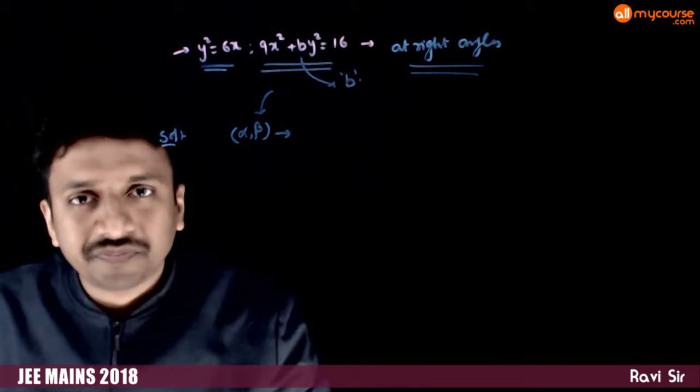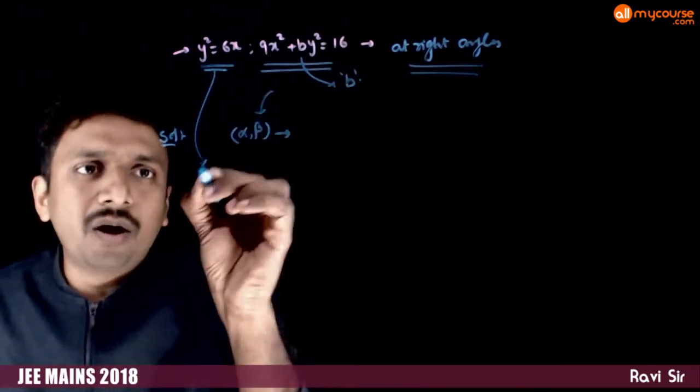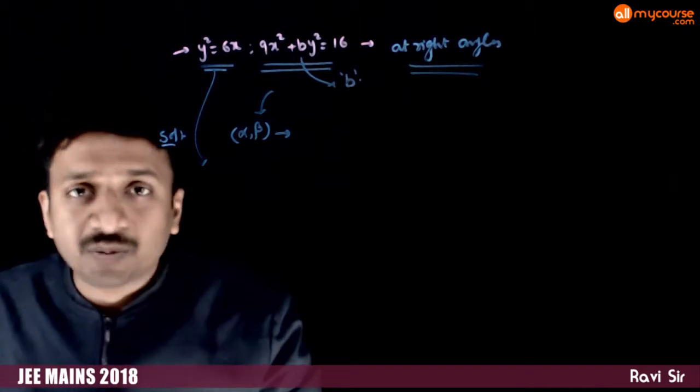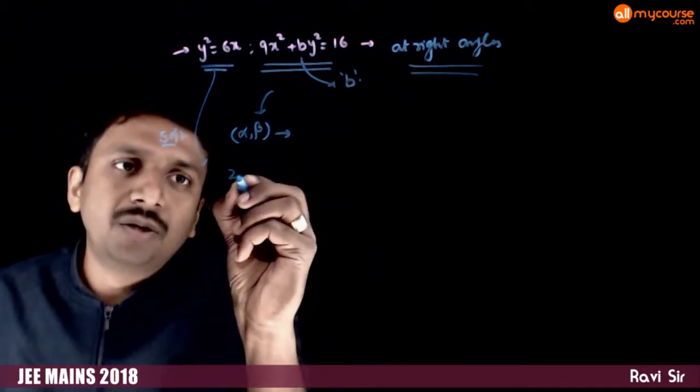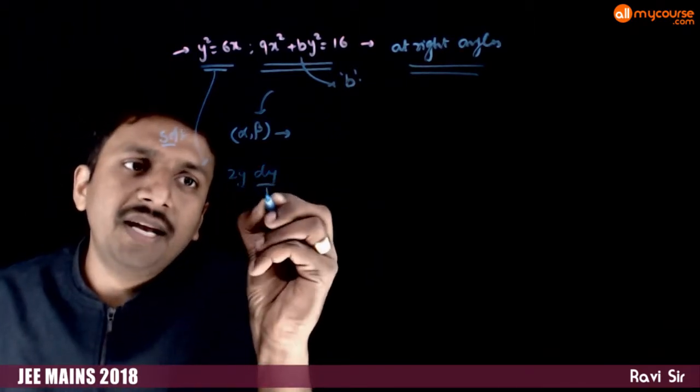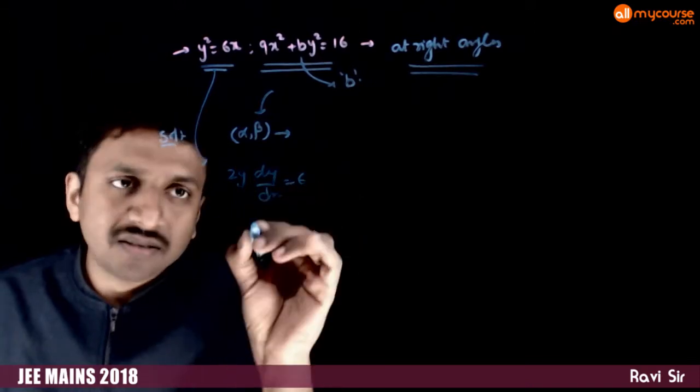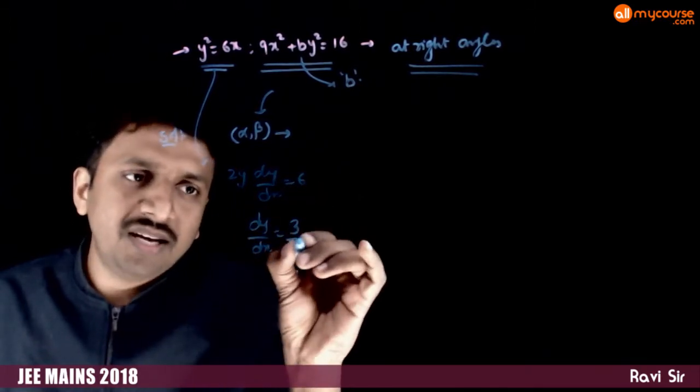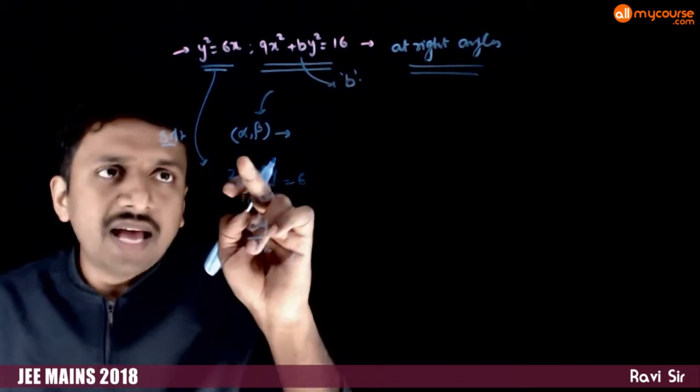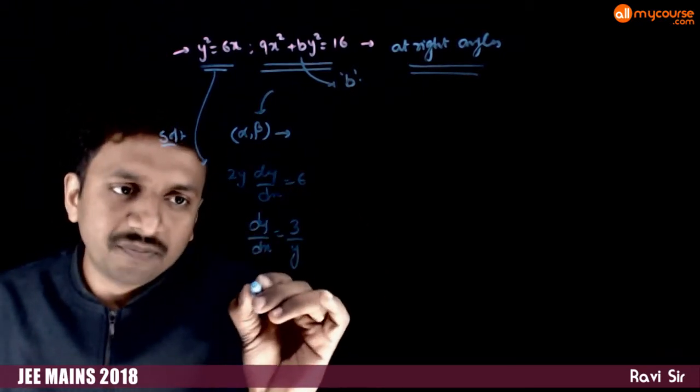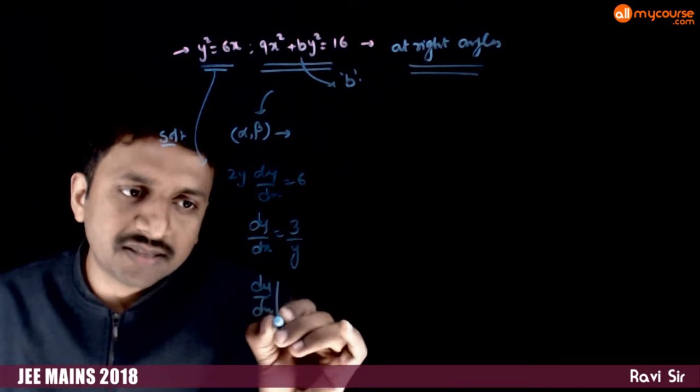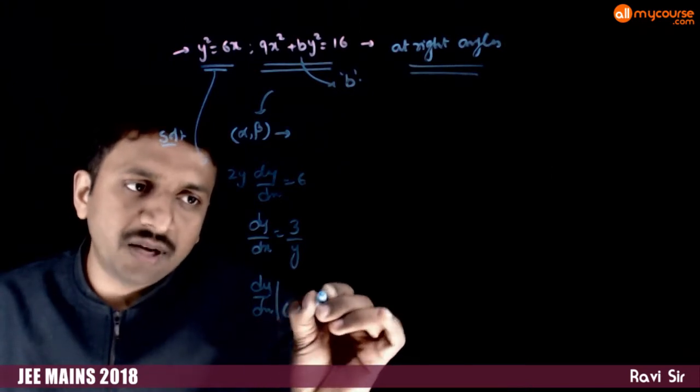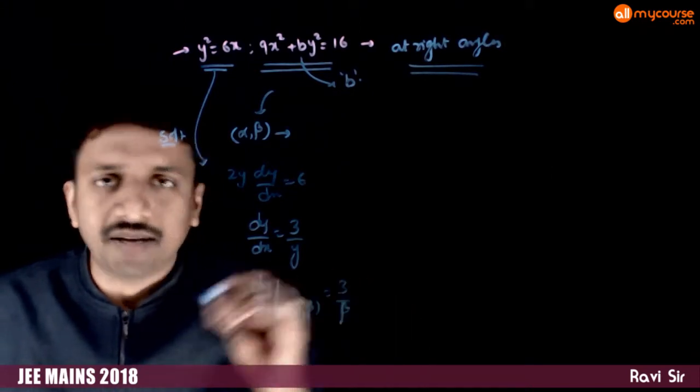First let us write the corresponding equation. What is the slope of the tangent at this point alpha beta? 2y dy by dx is equal to 6, so dy by dx is equal to 3 by y. At this point alpha beta, dy by dx at the point alpha comma beta is 3 by beta.